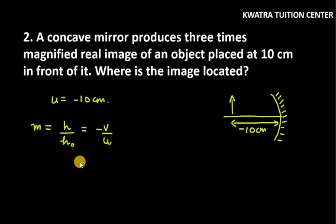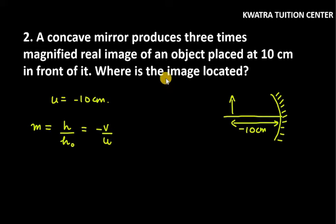Neither we know the height of image, nor we know v, nor we know h₀. So, the three values are unknown — the object height does not know, image height does not know. So, one relation does not immediately solve.